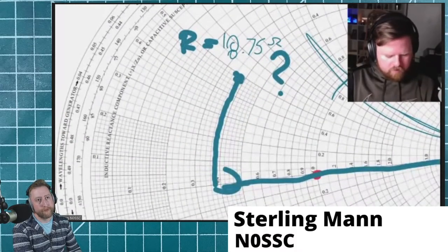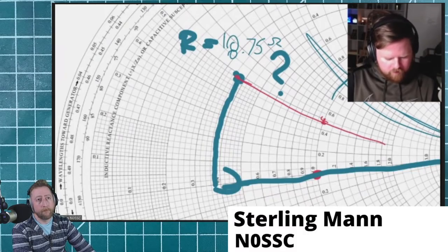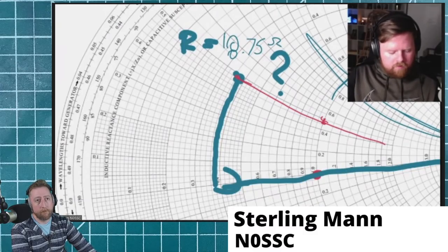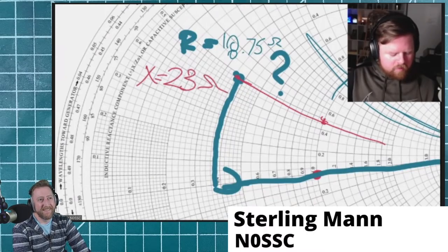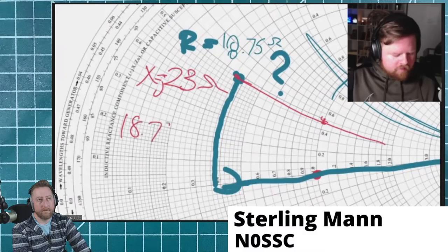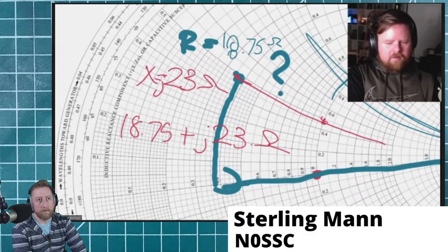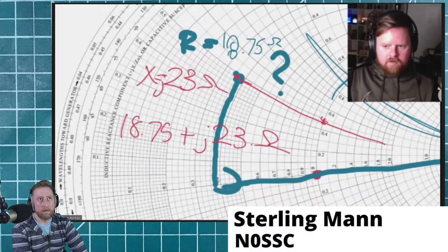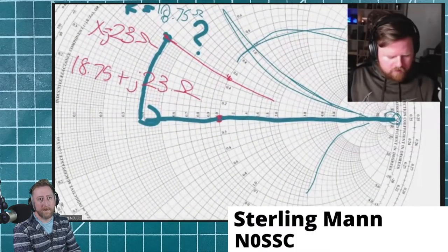Now for the reactance: just like the circles are constant resistance, the arcs coming out from the open-circuit side are constant reactance. You trace your point over to those arcs — it looks like about 0.46 to 0.47. You multiply that by 50 as well, which gives about 23 ohms. Reactance is always imaginary, so you put a j — that point represents approximately 18.75 + j23 ohms. That's how you figure out the value of a point.